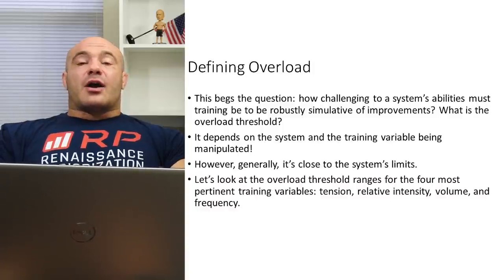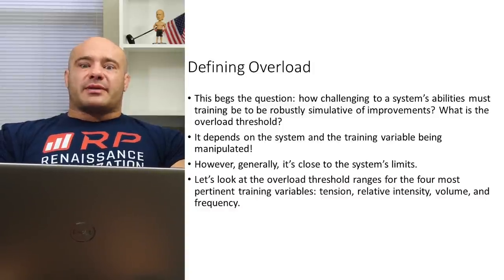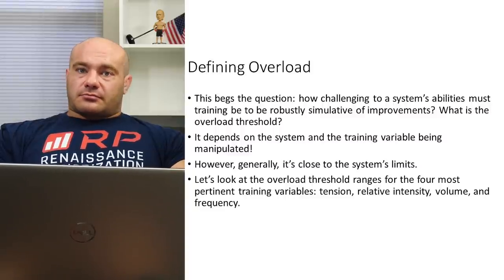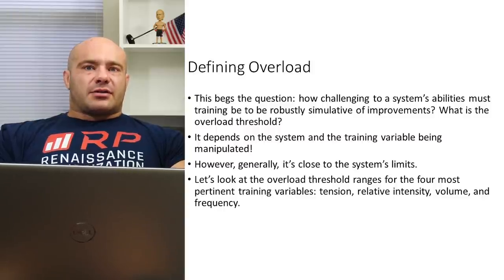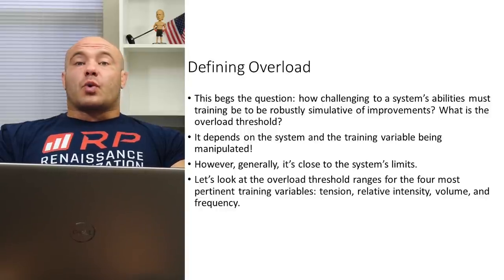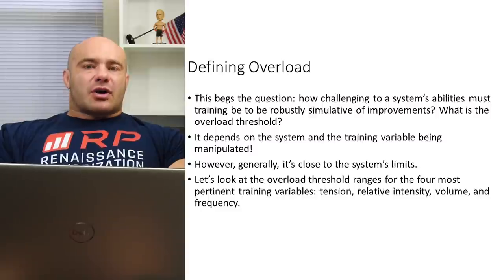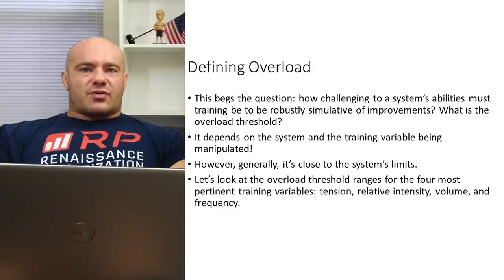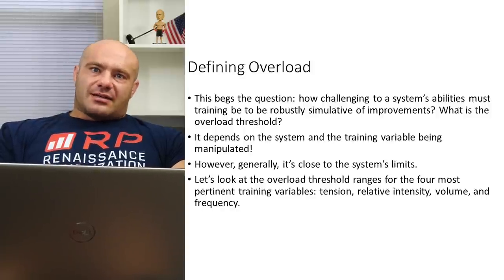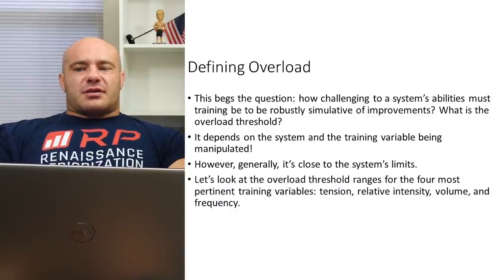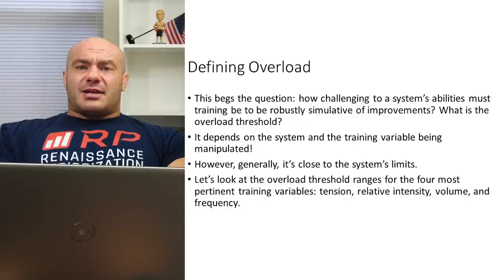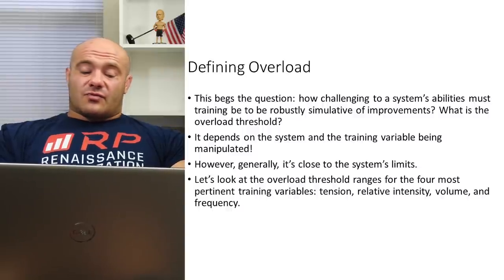We're going to start with tension — how much weight is on the bar. Then relative intensity — how close to failure you're taking a specific set. Then volume — how many working sets you're doing per session. And lastly, frequency — how many training sessions per week per muscle group. If we know the overload thresholds for all of those, we'll have a pretty good insight on how hard training needs to be to reliably cause adaptation.